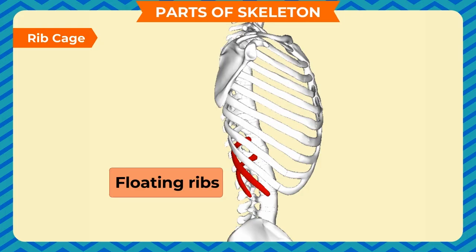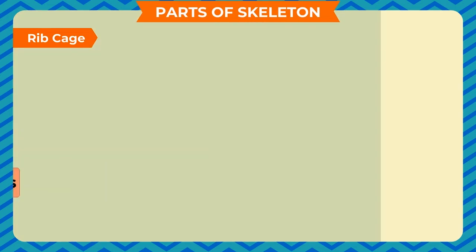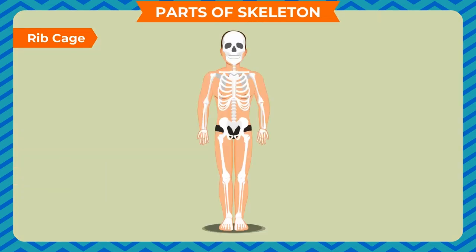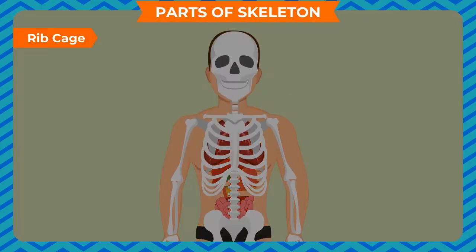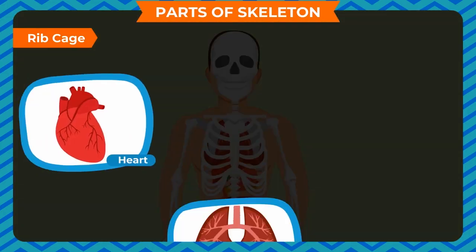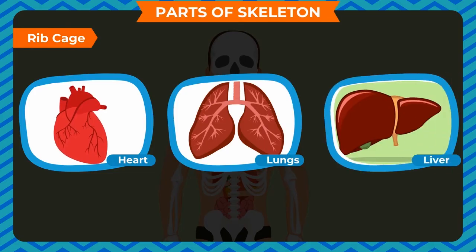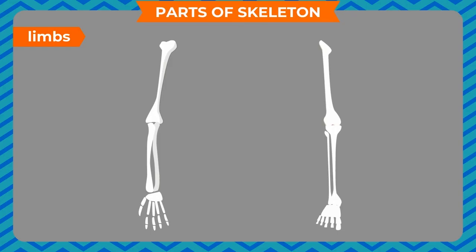The ribcage forms the framework of bones in the chest. They resemble a cage enclosing three vital organs: the heart, lungs, and liver. Limbs refer to the outgrowths of our skeletal system, i.e., our arms and legs. Arms are made up of 30 bones each.